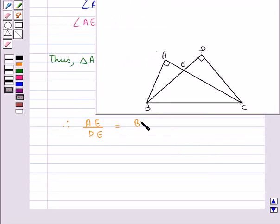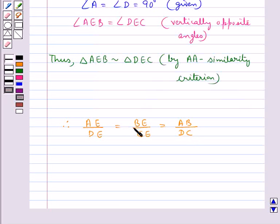Let's consider this, so from here we get AE into CE is equal to BE into DE.